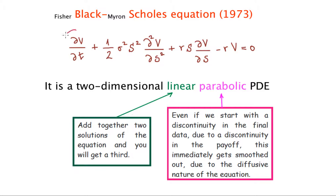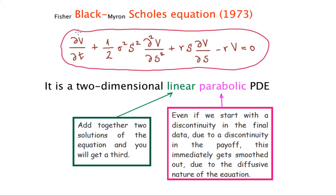Here we have the Black-Scholes equation we have just derived. This is a second-order derivative, two-dimensional because it depends on t and S as independent variables. It's linear because the square of the second or first-order derivatives do not appear. It's parabolic because A, B, and C fulfill the relation required for a parabolic partial differential equation.